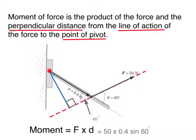The perpendicular distance, if you know your math well, should be 0.4 sin 60°, and the moment is 50 times this distance, which is 50 × 0.4 sin 60°.